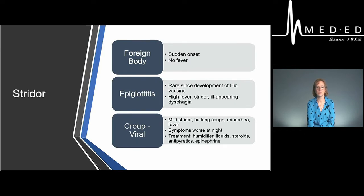If a child presents with stridor, there are a few etiologies that could be the cause. We're going to talk about a foreign body, epiglottitis, and viral croup. A foreign body — the typical scenario is a sudden onset. The child is well, happy, playing, and all of a sudden presents with stridor, which is a significant inspiratory noise and increased work of breathing. Always be suspicious of foreign bodies in children who present with an acute onset of any respiratory complaint, but most specifically stridor.